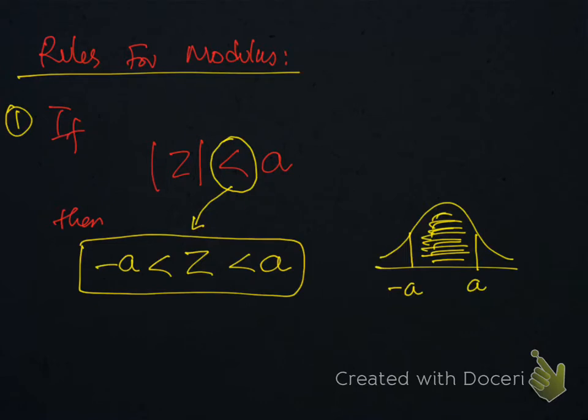Rules for modulus: If we have the lesser sign, |z| < a, then this is the way to write the solution of this inequality. It means z lies between -a and a, and this is the sketch of z, meaning this area is required.